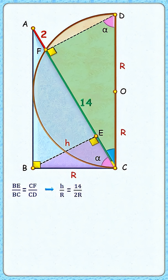Now both sides R will get cancelled down and we'll get h as 7 cm. Now in this blue triangle the base length is 16 and the height is 7 cm.